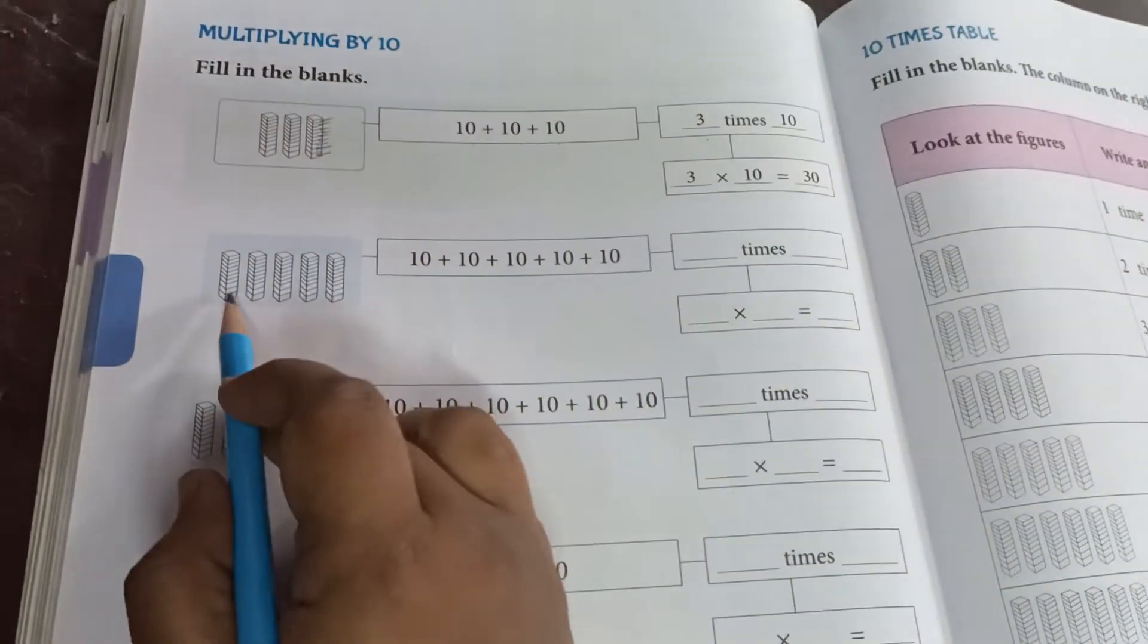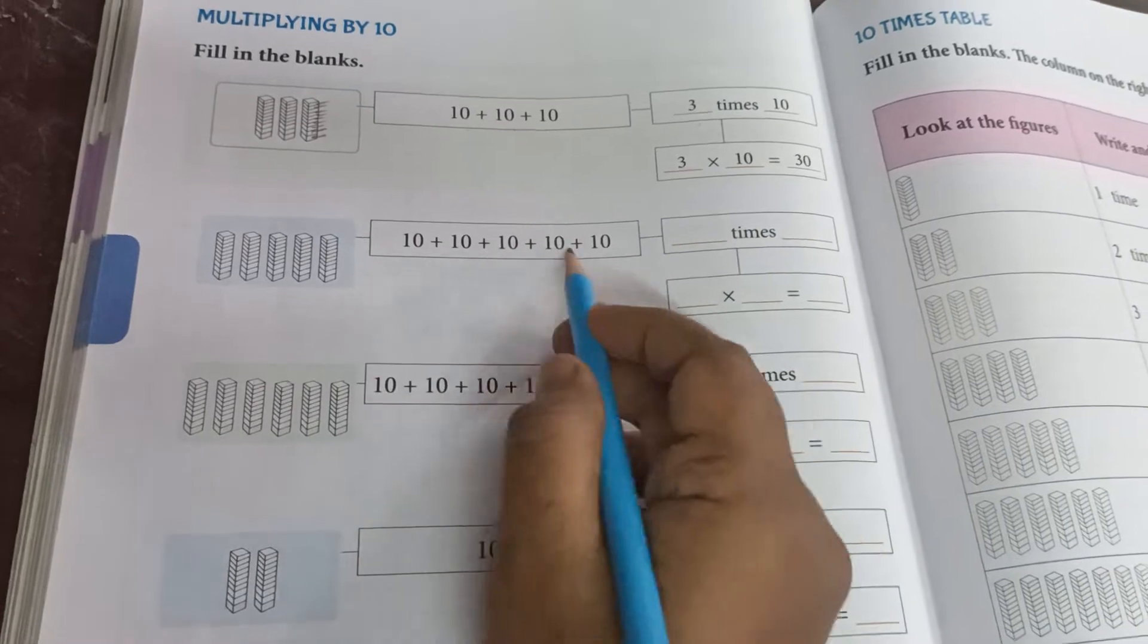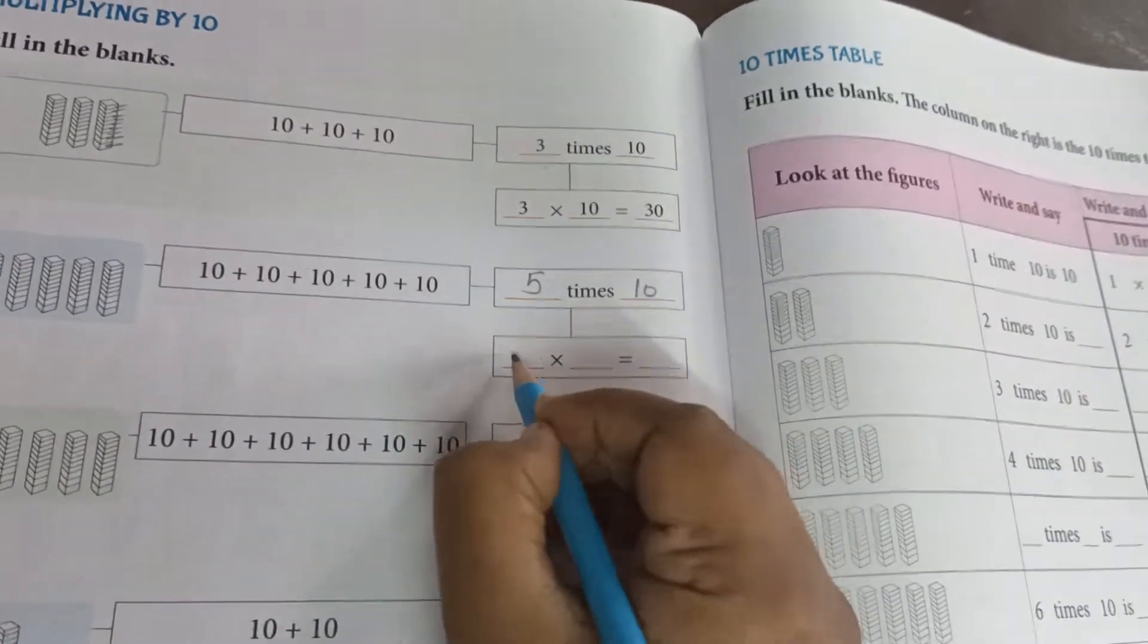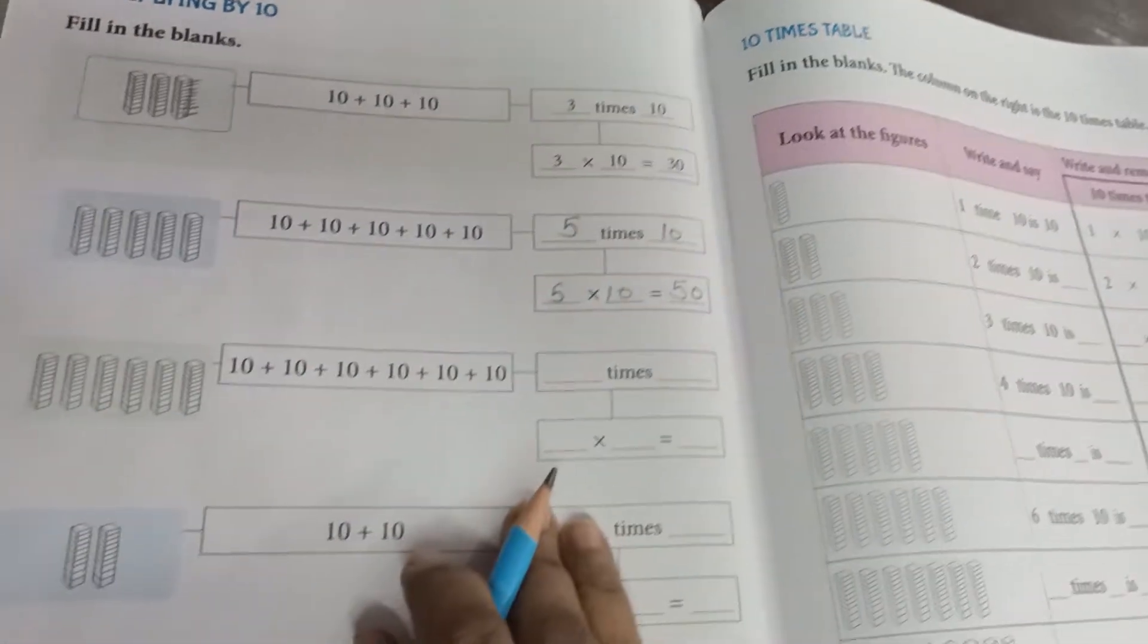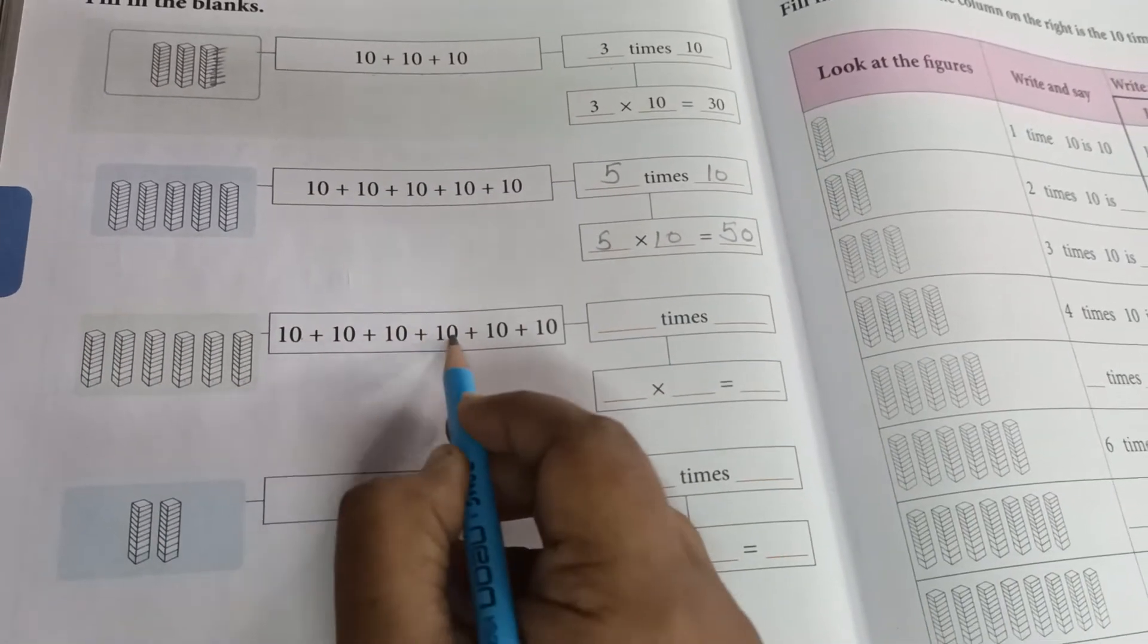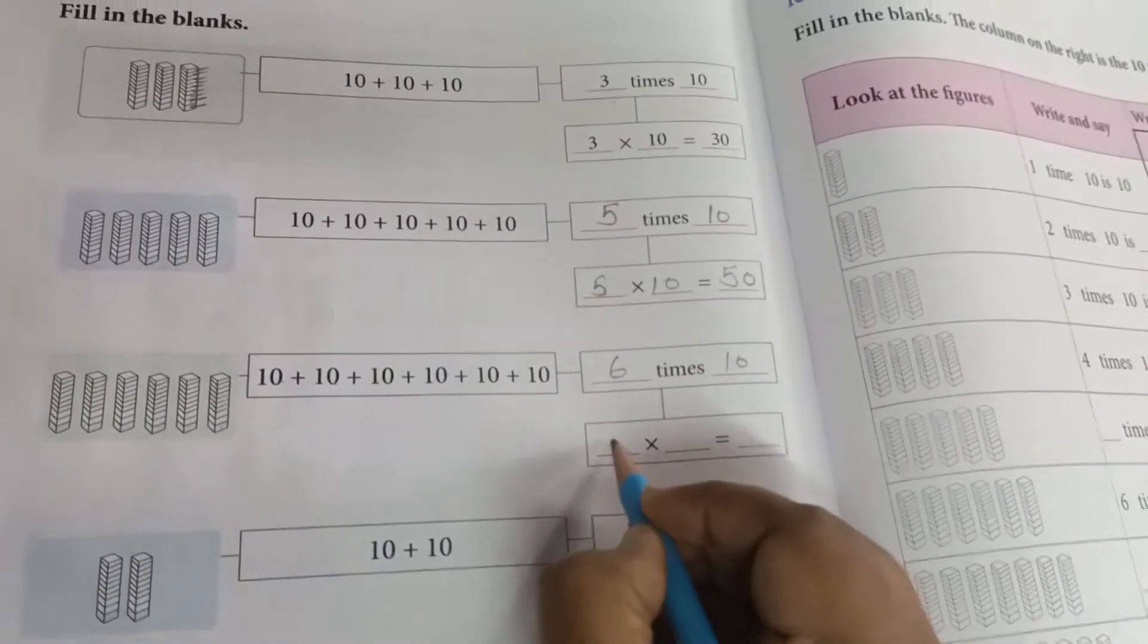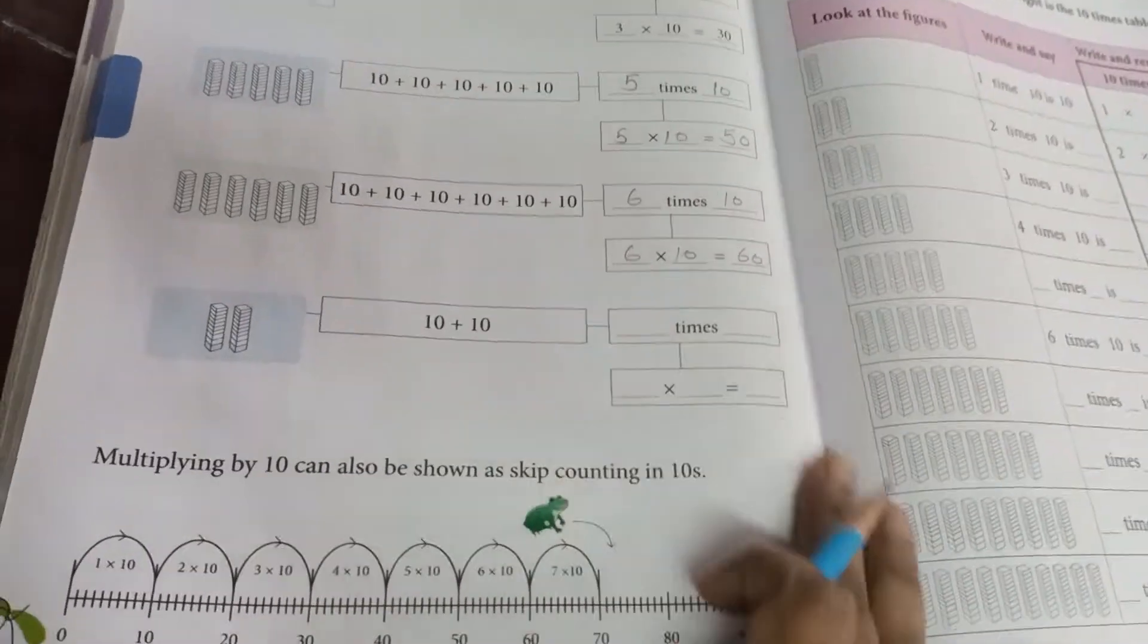So the same way that we have given here, how many times are in a set of books? 1, 2, 3, 4, 5, 6. So 6 times 10. Means 6 multiplied by 10, the answer will be 60. Now this you have to do with your own.